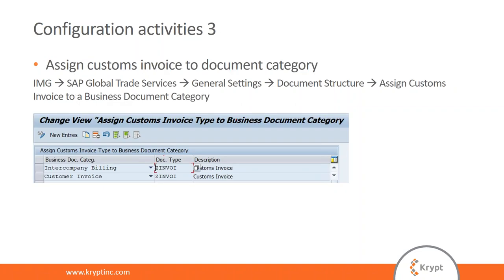In this slide, I'm showing where you map the business document category to the GTS invoice document types. In today's case, we're looking at an intercompany integration from ECC, and here you can see we've mapped this document type appropriately in this step.